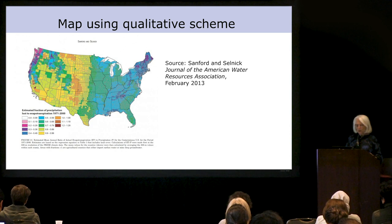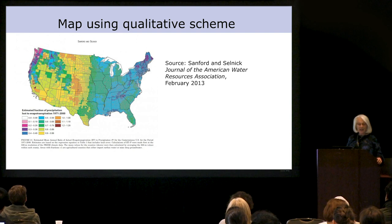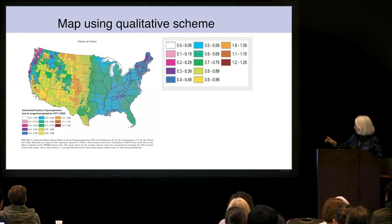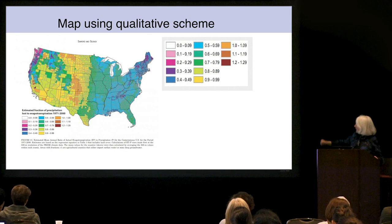Here is a map from the Journal of American Water Resources Association. You can see a big divide in the middle of the country where the yellow and green meet — or at least it looks like a big divide. If you blow up the scale, you can see that the green is 0.7 to 0.79 and the yellow is 0.8 to 0.89. They're not that different — they're adjacent values, but it looks like there's a big difference.